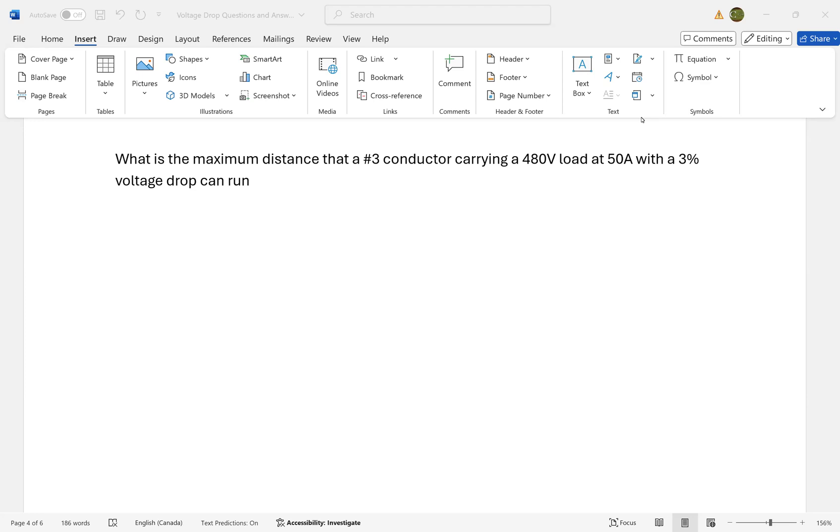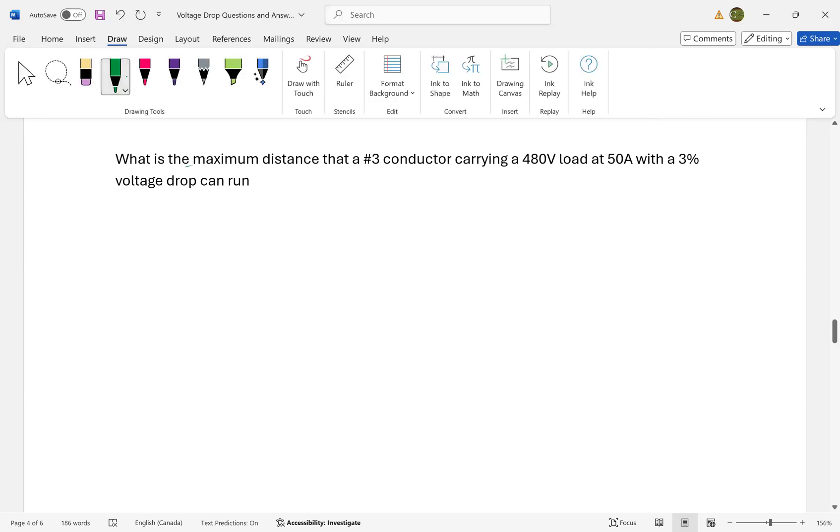Here's a voltage drop problem asking: what is the maximum distance that a #3 conductor carrying 480 volts at a load of 50 amps can run if we can accept a 3% voltage drop?